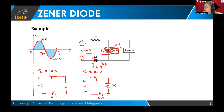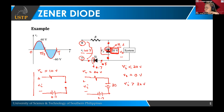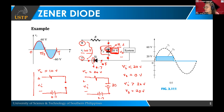So for VI less than 20 volts, our V output is going to be less than 20 volts. But when the Zener diode turns on because it is now operating at the reverse breakdown voltage, our V output will always be 20 volts. During the positive cycle, the output is always going to be 20 volts when your input is 20 volts or greater than 20 volts.